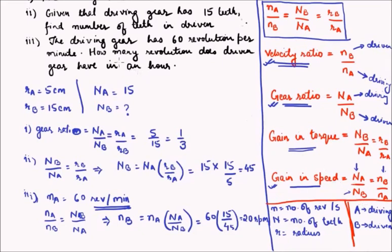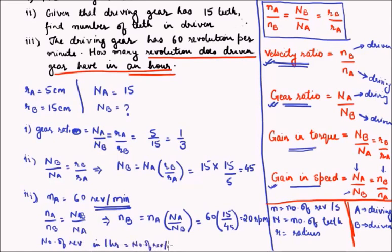But the important thing to note here is that the question has asked us to find how many revolutions does the driven gear have in one hour. So we don't need one minute, we need one hour. This is number of revolutions in one minute. So to find number of revolutions in one hour, we can do number of revolutions per minute, and how many minutes are there in one hour? 60. So we multiply it with 60. That would give me 60, 20 times 60 is 1200 rev per hour.